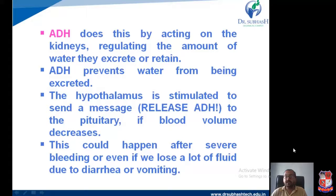Antidiuretic hormone can also be called vasopressin. Vasopressin is basically a polypeptide hormone. Concerning blood vessels, it generally causes constriction of blood vessels, giving rise to an increase in blood pressure. It also works on the retention of sodium, and by retaining sodium it reduces the amount of urine produced.